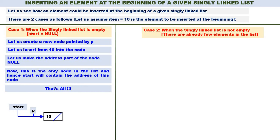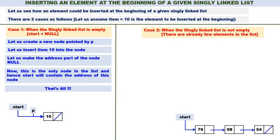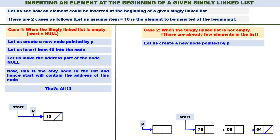Now we shall come to case 2. Case 2: start is not equal to null; start is containing the address of the linked list. There are three nodes in the linked list: 76, 08, and 54. The first step is the same — create a new node pointed by P. We will create a new node pointed by P. Next, we have to insert 10 into the node. Let us insert item 10 into the node. 10 is inserted.